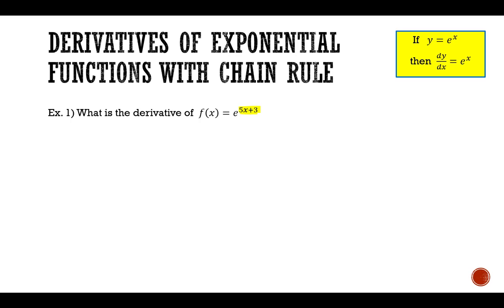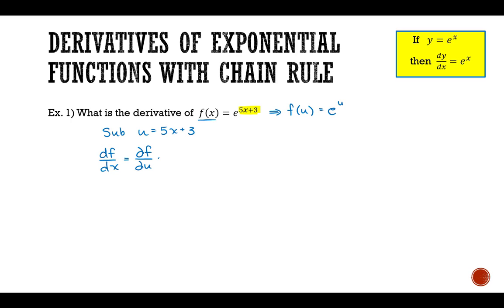Remember that the chain rule is a trick of substitution. We're going to substitute u = 5x + 3 into the expression, giving us f(u) = e^u. The chain rule says that df/dx — what we're really looking for — will be equal to df/du times du/dx.